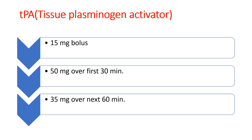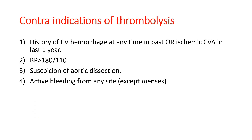The next agent is tPA — tissue plasminogen activator. The total dose is 100 mg. The first 15 mg is given as a bolus, the next 50 mg is given as an infusion over the first 30 minutes, and the last 35 mg is given over 60 minutes. Total dose: 100 mg.